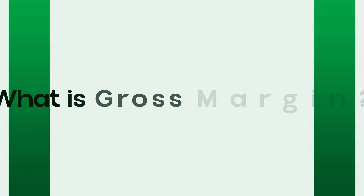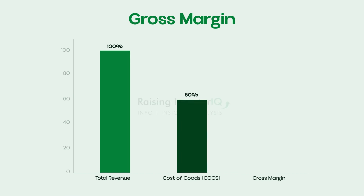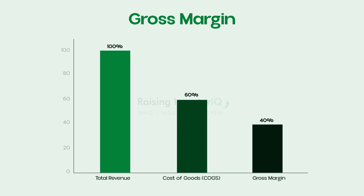What is gross margin? Let's start with the basics. Gross margin is the percentage of total sales revenue that a company retains after deducting the cost of goods sold, or COGS. It's essentially the portion of revenue left over after covering the direct costs associated with producing the goods or services that the company sells.